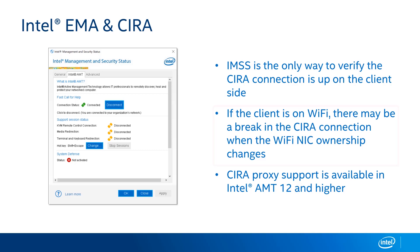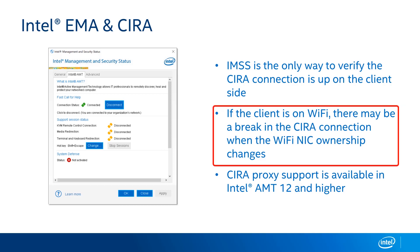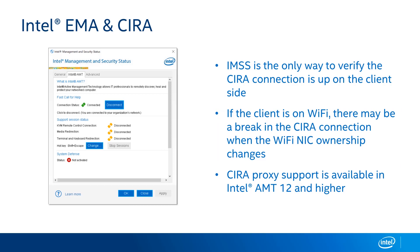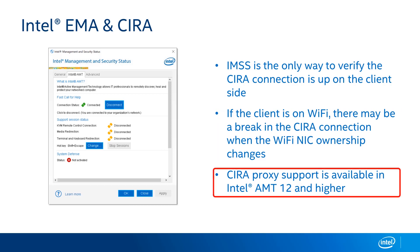When using Wi-Fi with CIRA, there can be a delay between the OS shutdown and AMT taking over the wireless card and re-establishing a CIRA connection. The way wireless cards are architected, either the operating system owns the NIC or the Active Management Technology capabilities of the vPro platform own it. So when the OS shuts down, there will be a delay before AMT takes over and reestablishes that CIRA connection. Also, if your environment uses web proxy servers (not transparent proxies), you need AMT version 12 or higher to support CIRA from behind web proxies.